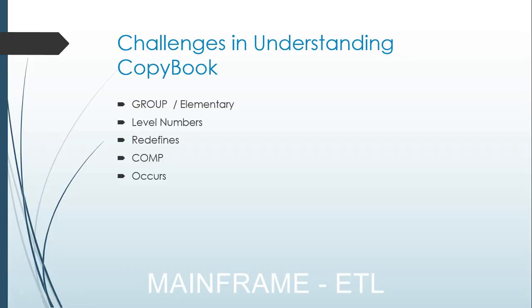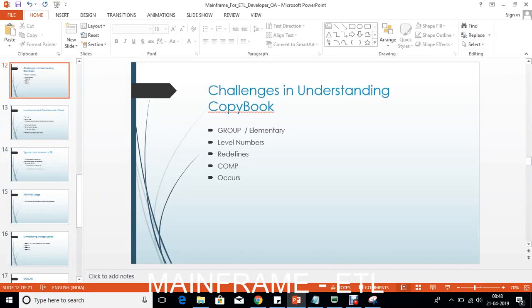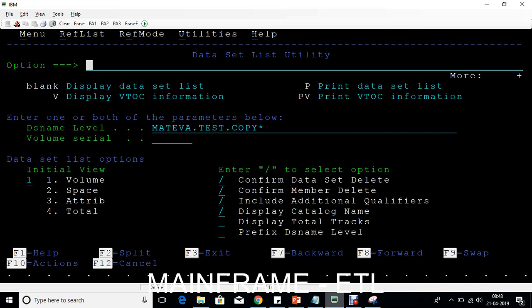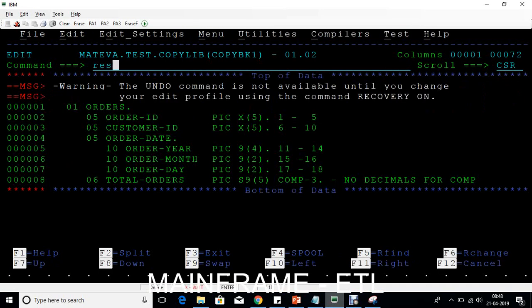Hi, welcome back to Mainframe's ETL tutorial. Now let us look at the interesting and important topic: challenges in understanding the copybook. When you are new and looking at a copybook, you may get confused by looking at the structure. How do we overcome these things and understand clearly when looking at the copybook? The important things you will see are data types, group type, elementary type, level numbers, redefines, computational, and occurs.